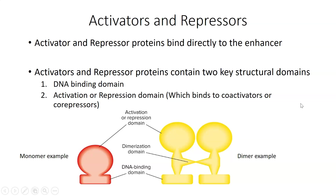This slide shows the basic structure of activators and repressors. Both of these are involved in binding to the enhancer, and both have two domains as part of their protein structure. They both have a DNA binding domain because one of their activities is binding to the enhancer DNA. In addition, they have either an activation domain for activators or a repression domain for repressors.